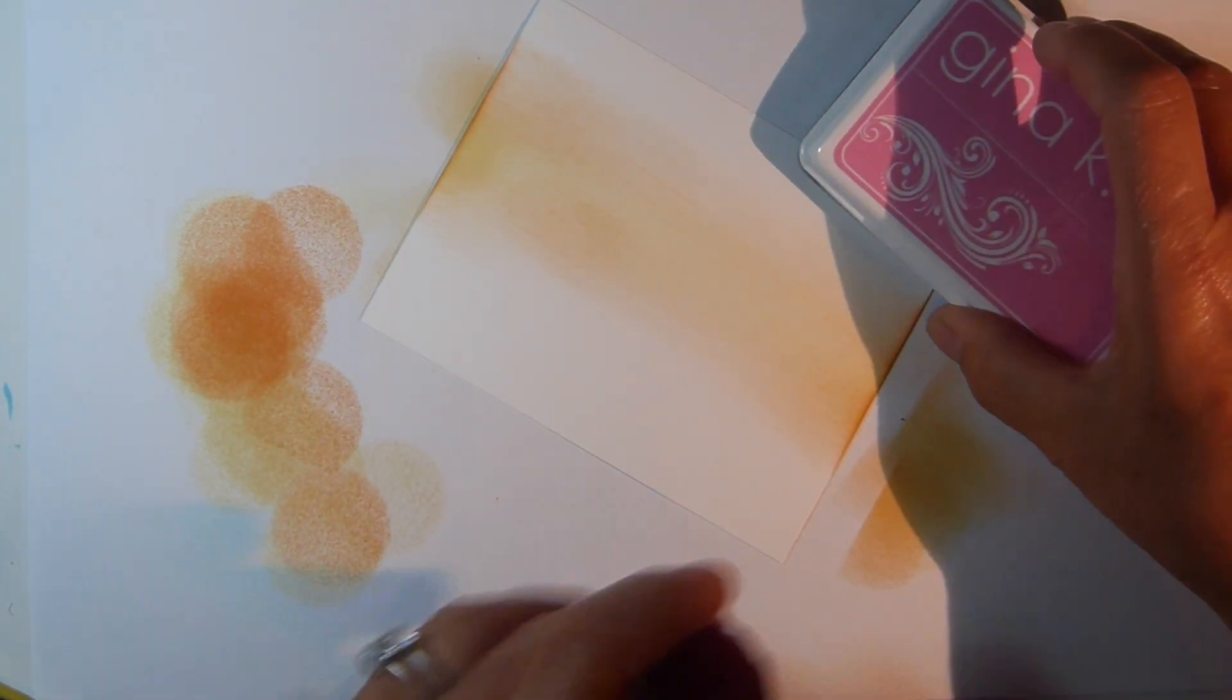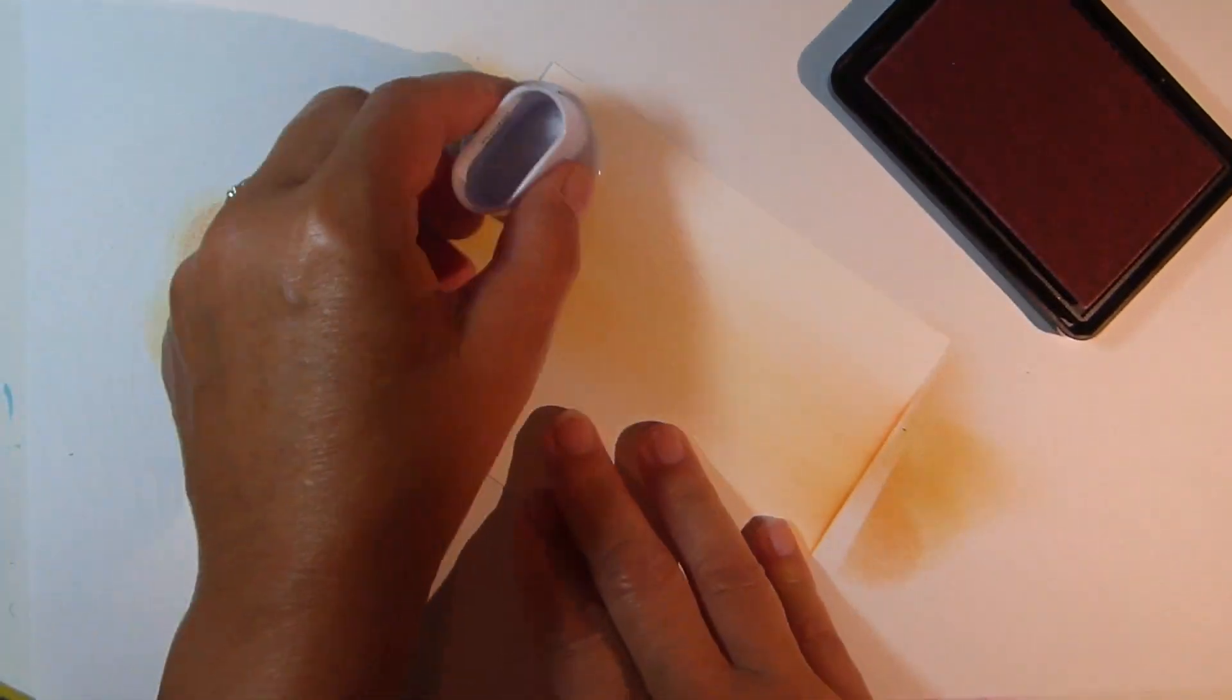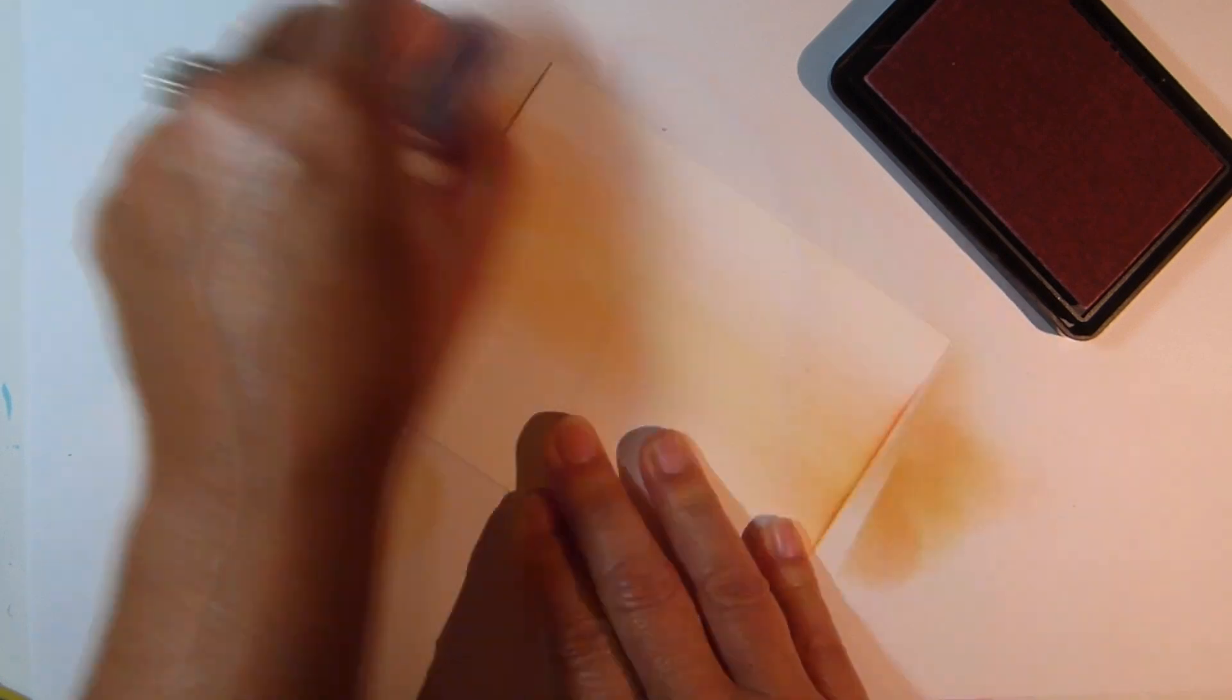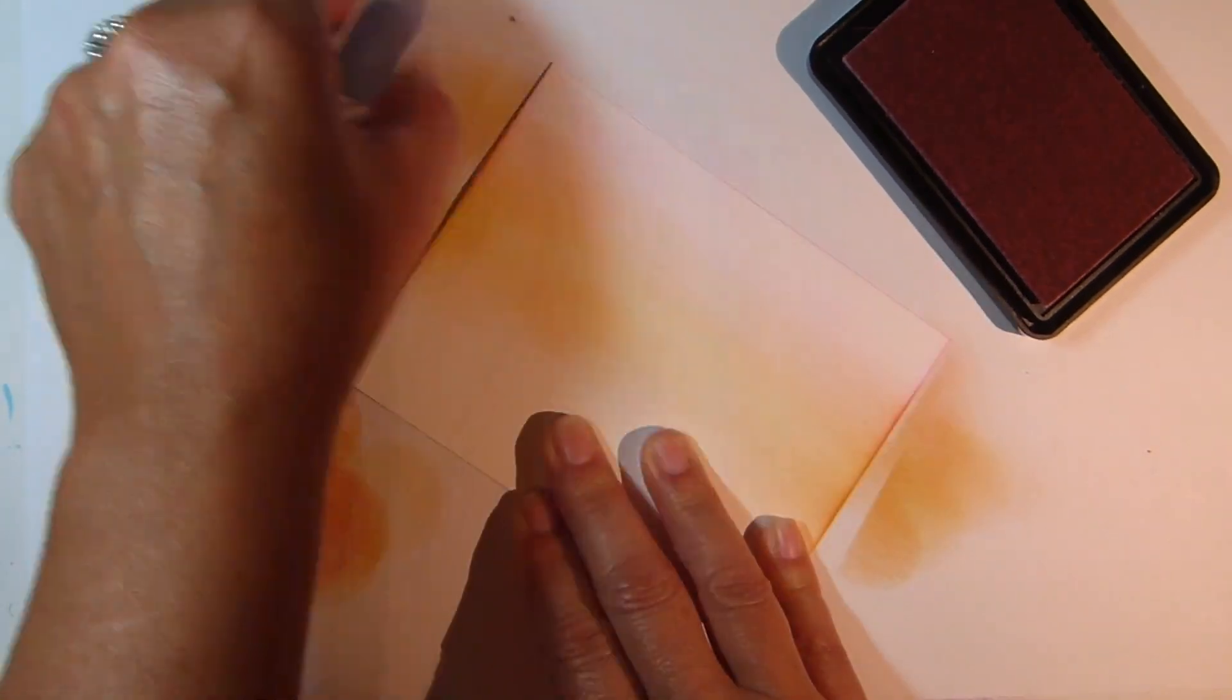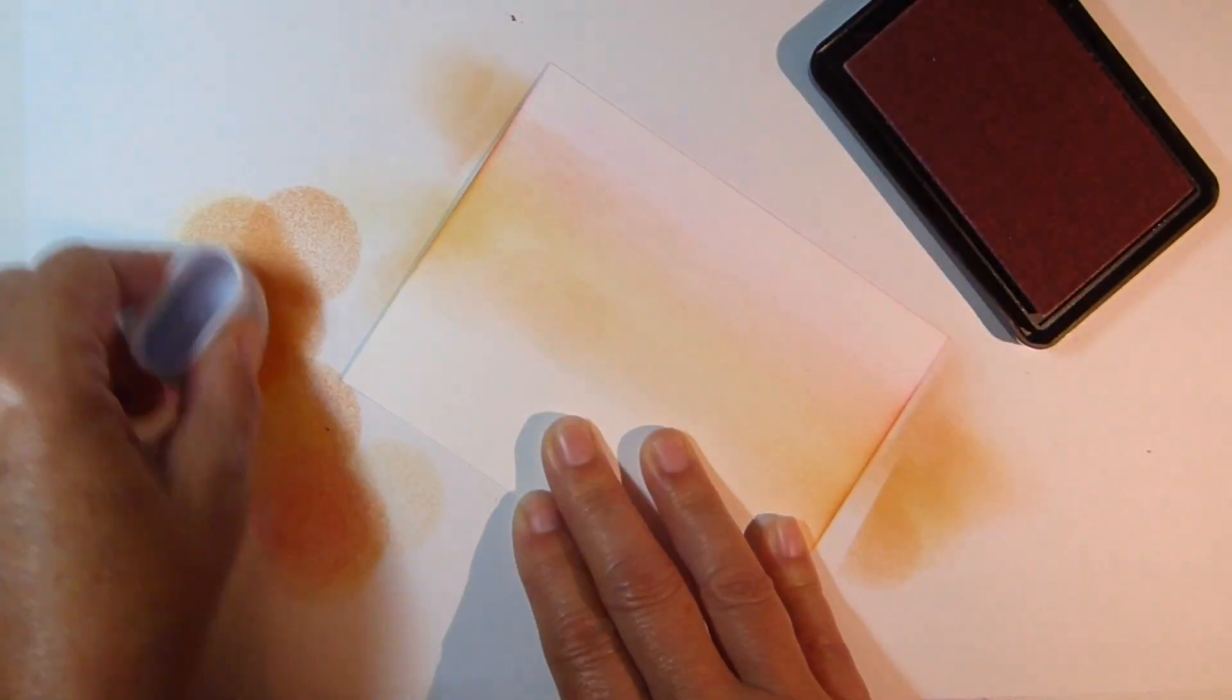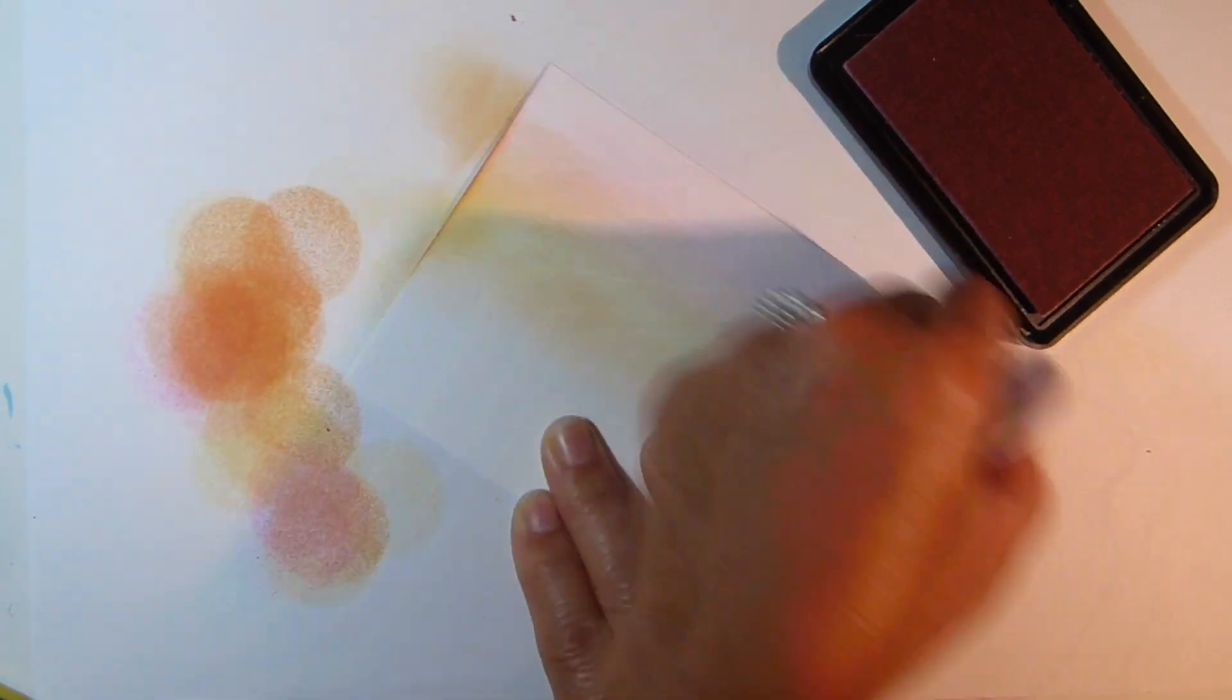Now let's switch to Gina K Bubblegum Pink ink and again we'll do that swiping technique working from side to side. Start with filling in the area above the orange at the top, and then after you've done that, work in the area below the bottom orange, filling that area in all the way across the cardstock.